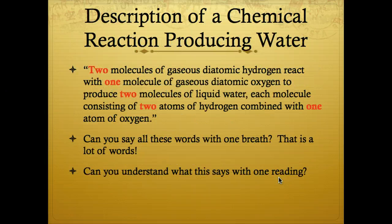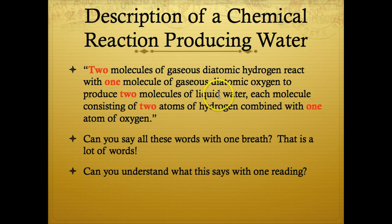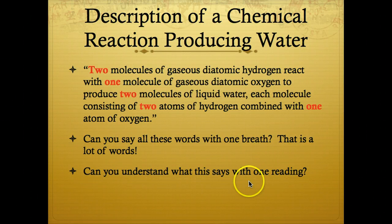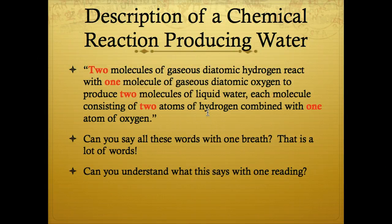Describing the chemical reaction producing water: we have two molecules of gaseous diatomic hydrogen reacting with one molecule of gaseous diatomic oxygen to produce two molecules of liquid water, each molecule consisting of two atoms of hydrogen combined with one atom of oxygen. It's very inefficient to describe what happens in a chemical reaction using all these words. However, we can describe it very efficiently using a chemical equation.